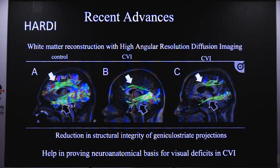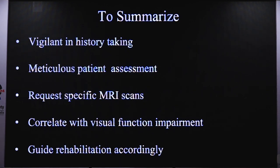Newer advances include high angular resolution diffusion imaging, which can image brain functional connectivity. There is a distinct reduction in structure in the geniculostriate projections, providing a neuroanatomical basis for vision deficits in CVI. To summarize: we need to be vigilant in history taking, meticulous in patient assessment, and give adequate time. Request specific areas of MRI scan, correlate the scan with visual function impairment, and guide rehabilitation accordingly.